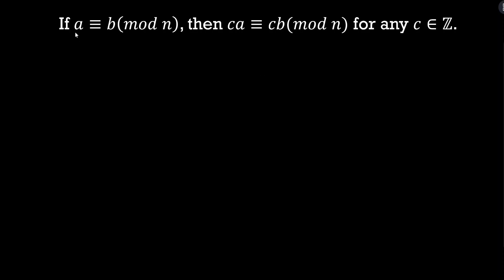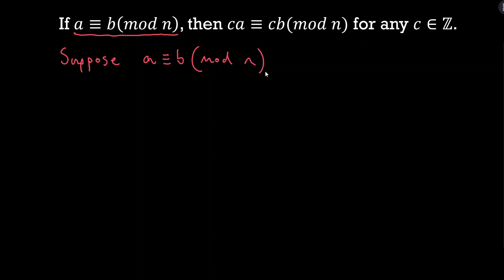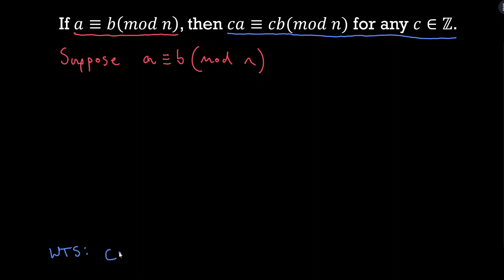Let's jump into the proof. We can use the direct proof method — this is a conditional statement. We can assume the if part is true, so I'm going to suppose that A is in fact congruent to B mod N. I look at the then part of the statement because that's my goal. I want to show that C·A is congruent to C·B mod N, and this is for any integer C.